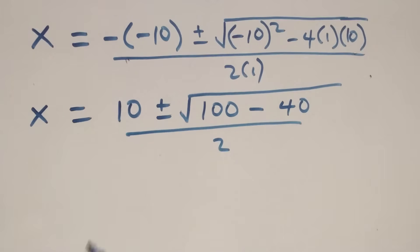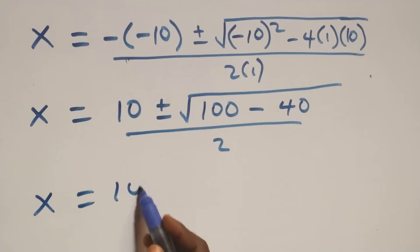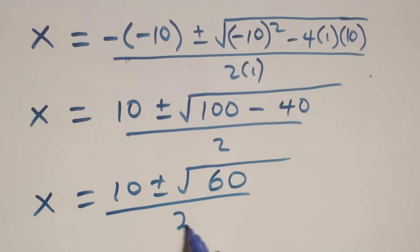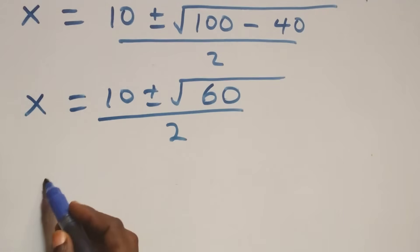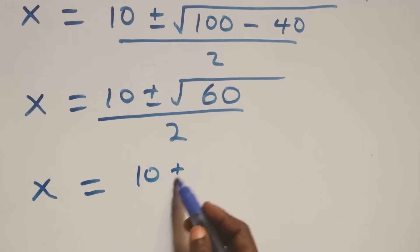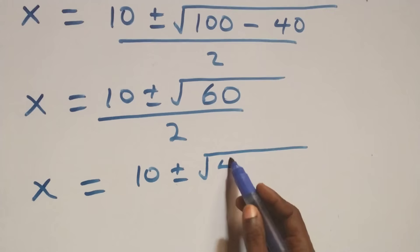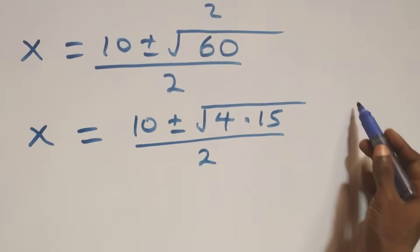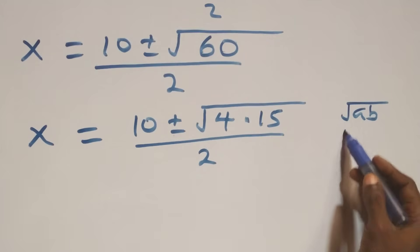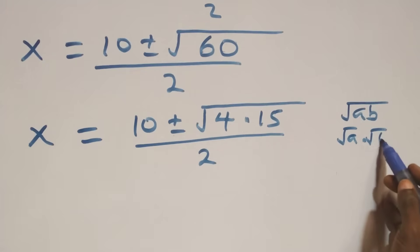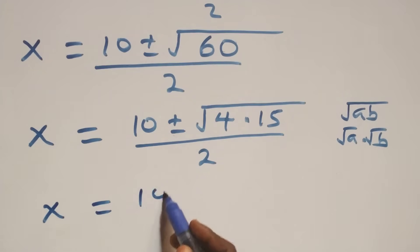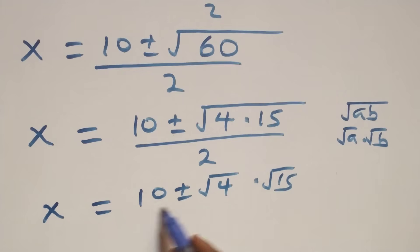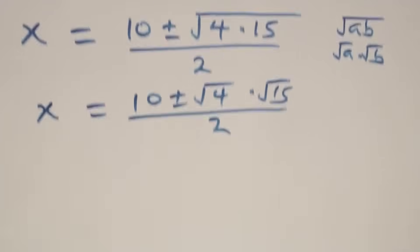So we have x equals 10 plus or minus square root of 60, all over 2. The square root of 60 can be written as square root of (4 times 15). Using the property that √(a·b) equals √a times √b, we write this as √4 times √15, all over 2.